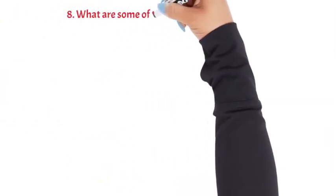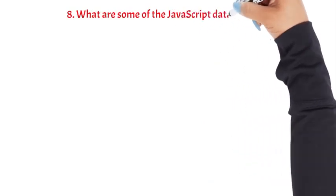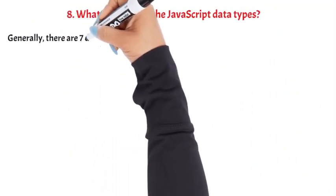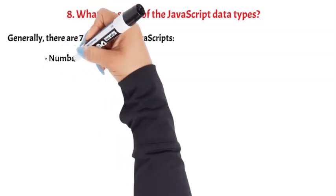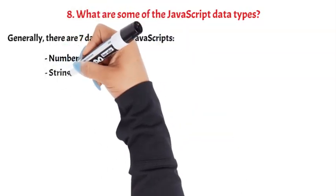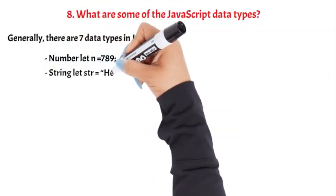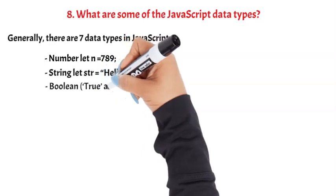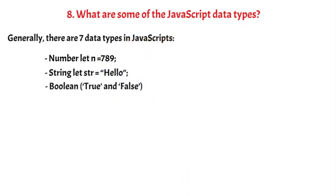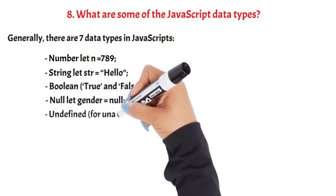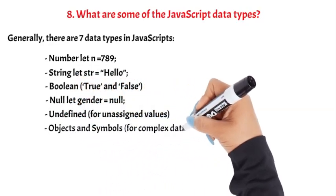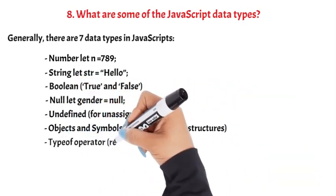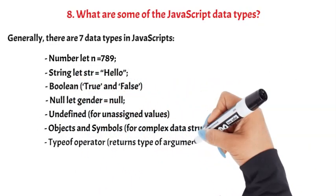Question 8: What are some of the JavaScript data types? Generally, there are seven data types in JavaScript: Number (e.g., let n = 789), String (e.g., let str = 'hello'), Boolean (true and false), Null (e.g., let gender = null), Undefined (for unassigned values), Objects, and Symbols for complex data structures. The typeof operator returns the type of argument.